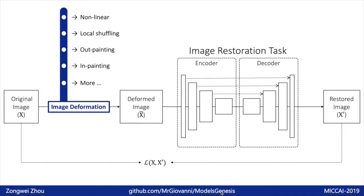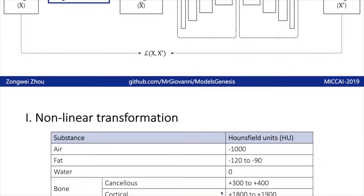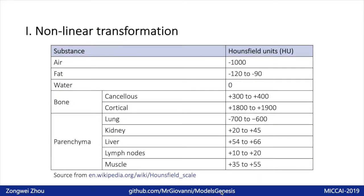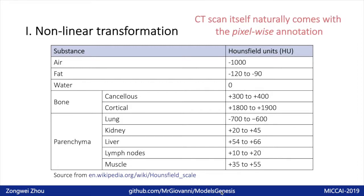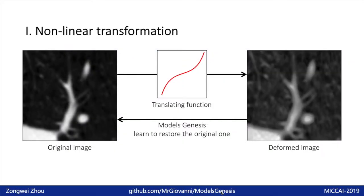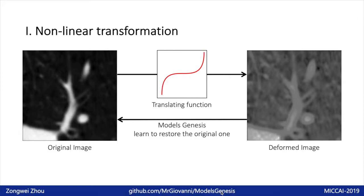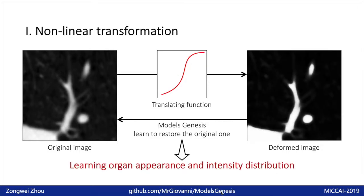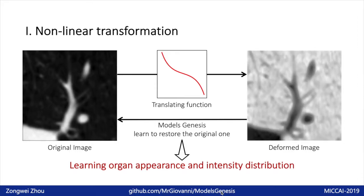To deform the image, we propose four different approaches. First, non-linear transformation. In a CT scan, the pixel intensity of air, organ, or bone has to be in a certain range of Hounsfield units, which means CT scans naturally come with pixel-wise annotation. Therefore, we apply a non-linear translating function to the CT images. By restoring the original intensity values, the model must learn from the organ appearance, including shape and intensity distribution.